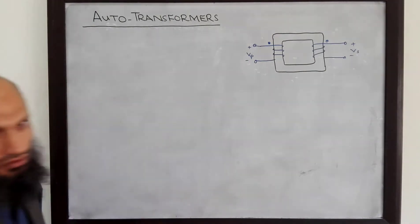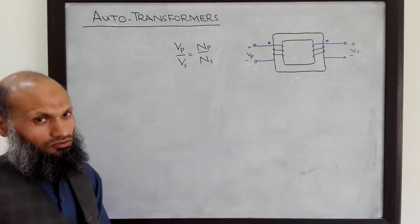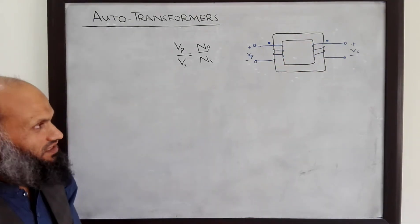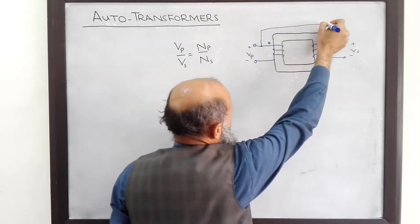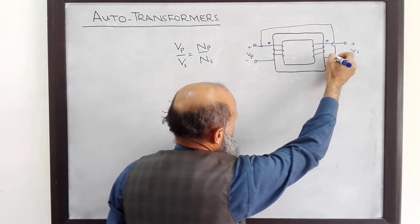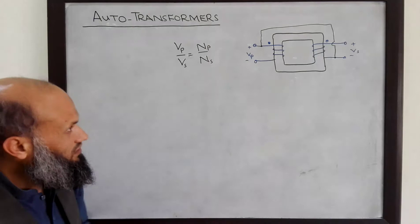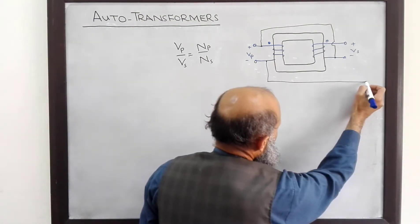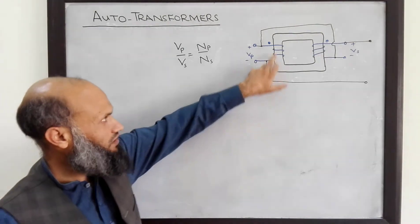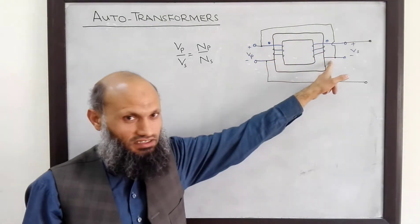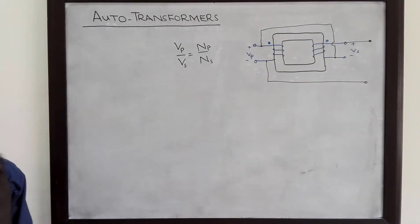These primary and secondary voltages, as you already know, are related by the turns ratio. What will happen if we, in addition to this magnetic coupling, also provide an electrical connection? That is, if we connect this wire over here, supply voltage at this point, connect a voltage source over here, and connect the load to this terminal. So here we not only have a magnetic coupling between primary and secondary side, but in addition to that, there is also an electrical connection. Such a transformer is called an autotransformer.